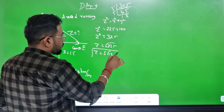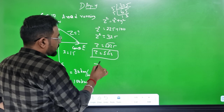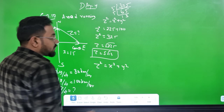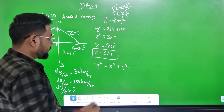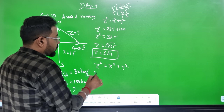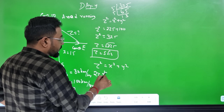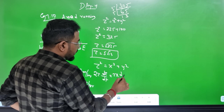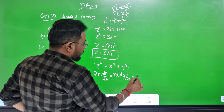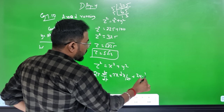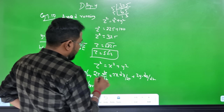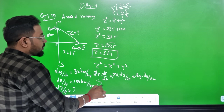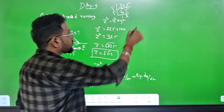Z squared equals x squared plus y squared. Now we differentiate with respect to time. We get 2z · dz/dt = 2x · dx/dt + 2y · dy/dt. The 2s cancel and we can substitute values.